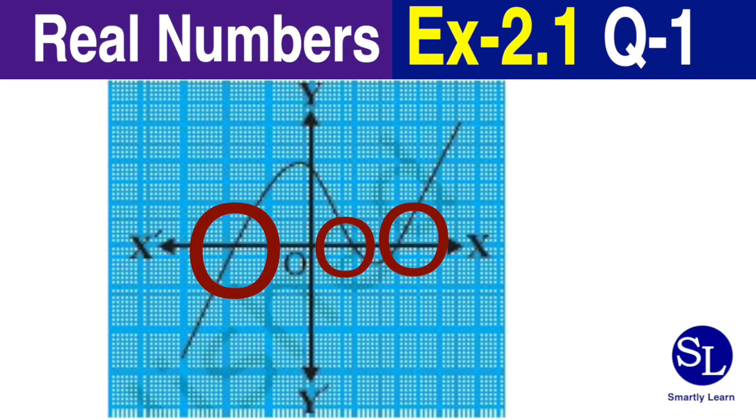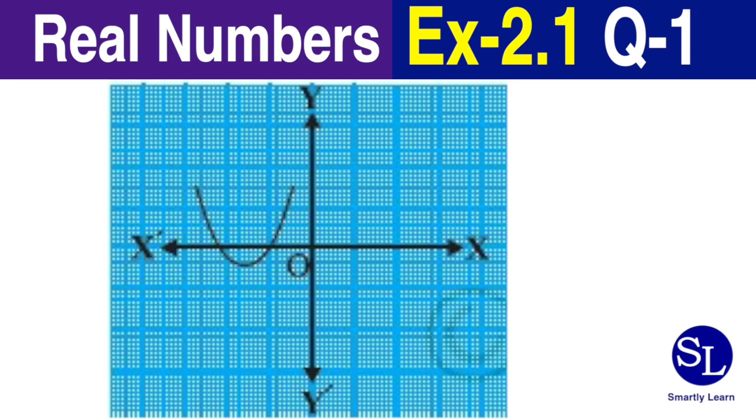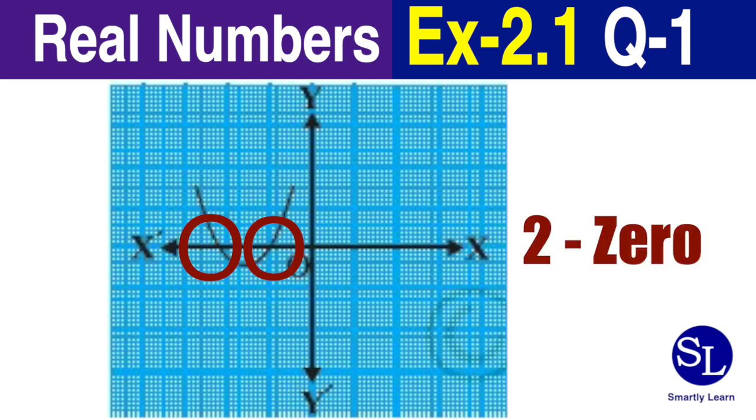Now let's take another example. In this case, the curve hits the x-axis at exactly two points, one here and one here. So this shows that this particular p of x has exactly two zeros of the polynomial.